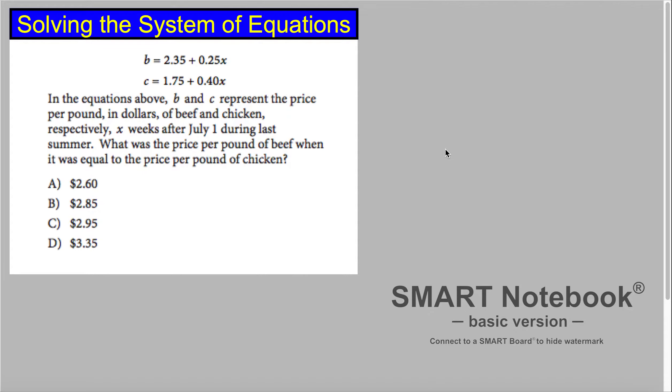Let's say we have the system B is equal to 2.35 plus 0.25x and C is equal to 1.75 plus 0.40x.